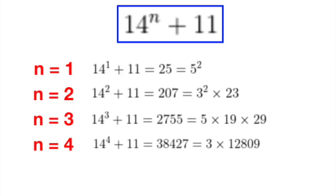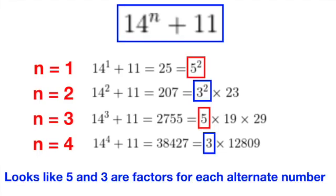When n equals 2, we get 207, which is 3 squared times 23. We can continue further for a few examples, and it seems that 5 and 3 are factors of 14 power n plus 11 alternately.